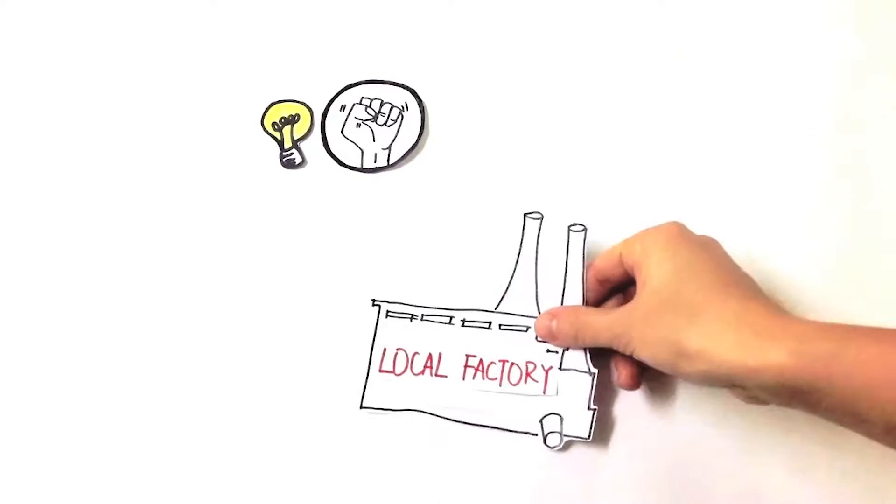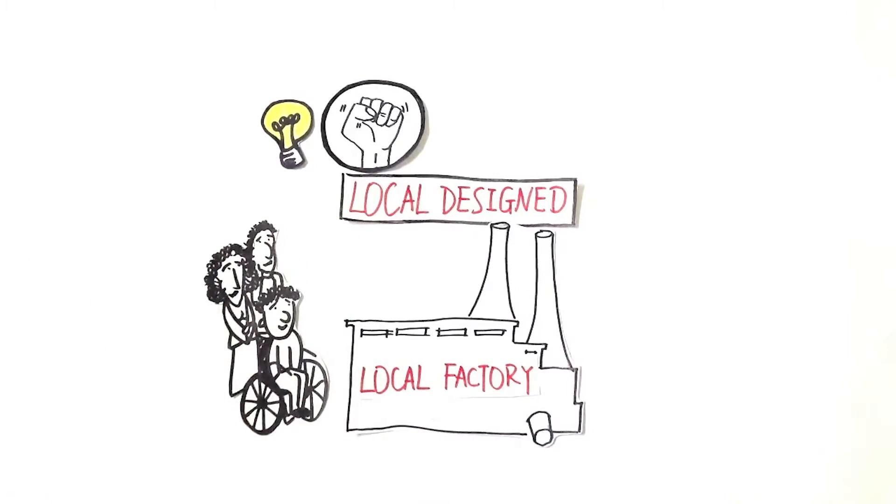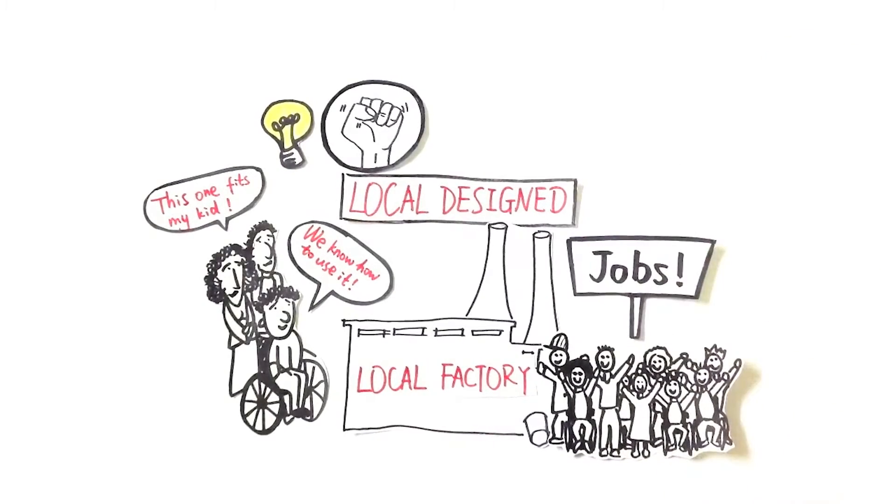What would help is if we support local production of wheelchairs designed for local conditions. What would help is if families get a wheelchair specifically designed for their needs, with training in how to use and repair it. What would help is if the production creates employment for people in wheelchairs.